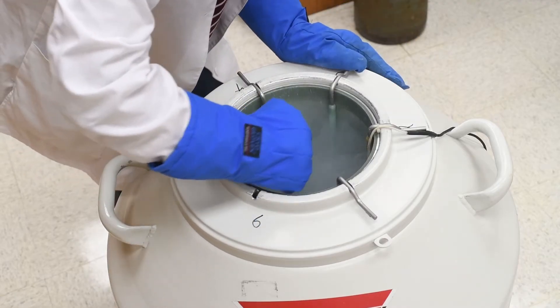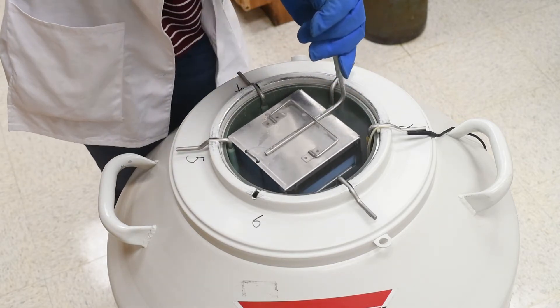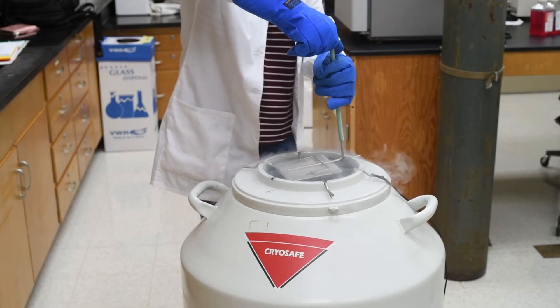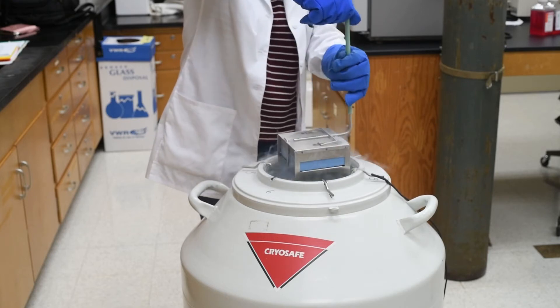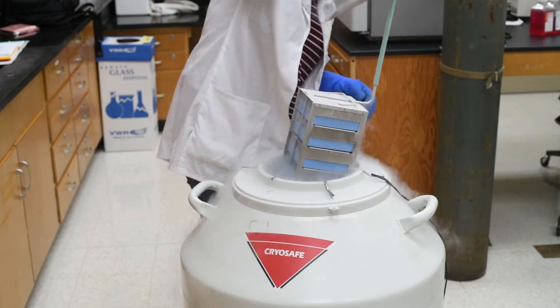Once the lid is removed, find the hook for the box you wish to remove and lift a couple inches up to get the box off the platform it sits on. Move the hook to the opposite side of the vessel and slowly lift out of the liquid nitrogen.